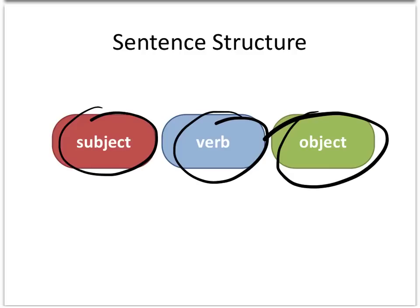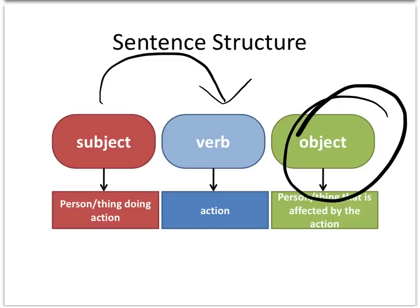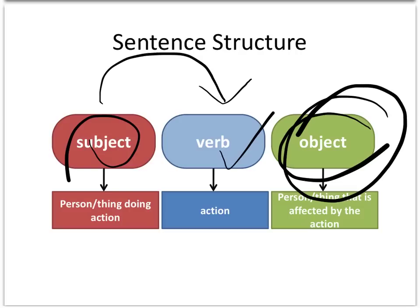It's simple, because in every sentence you have to have an action, and that's exactly what the verb is — the verb is an action. Verbs are an action, and the person doing the action, or the thing doing the action, is the subject. The affected party — the person or thing that didn't really ask to be there, or maybe didn't ask to be bought — is the object. So we've got the doer of the action as the subject, the verb is the action itself, and the object is the person or thing affected by that action.